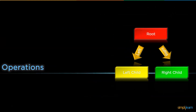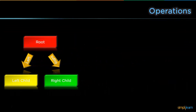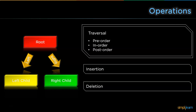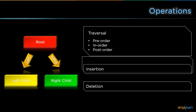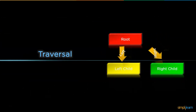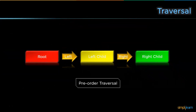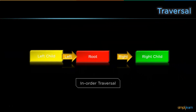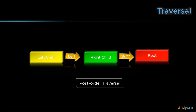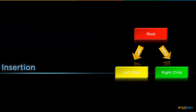We have now discussed binary trees, their terms, properties, and types. Now we will look at the operations that can be performed on a binary tree. There are basically three types: traversal, insertion, and deletion. For traversal, there are three different types possible: pre-order traversal, in-order traversal, and post-order traversal.